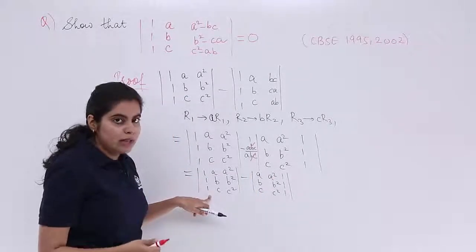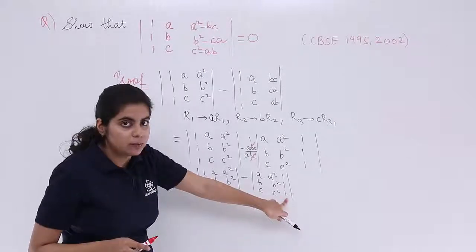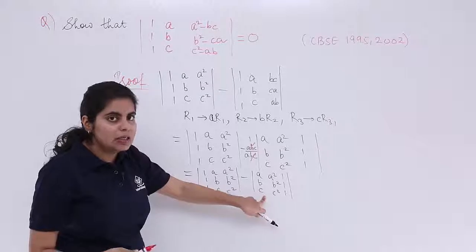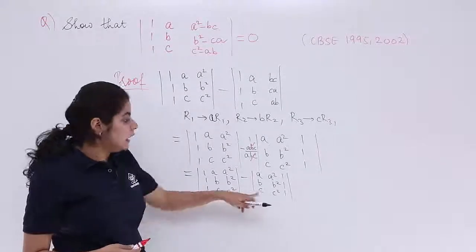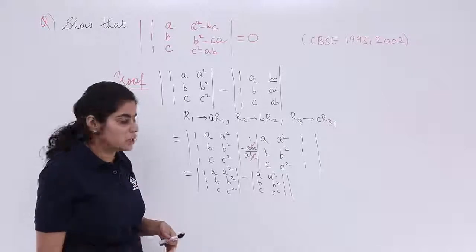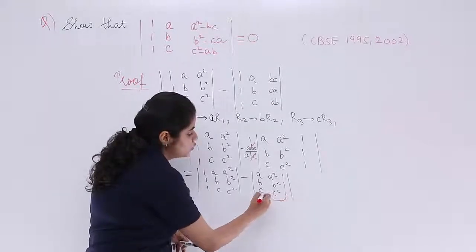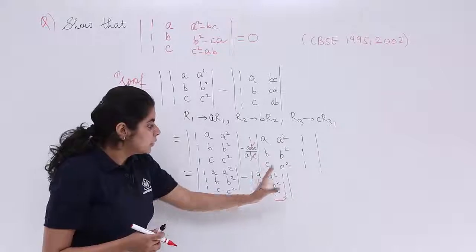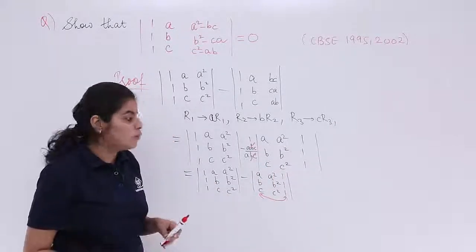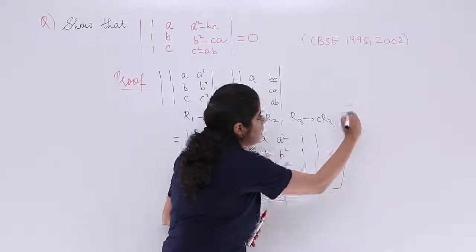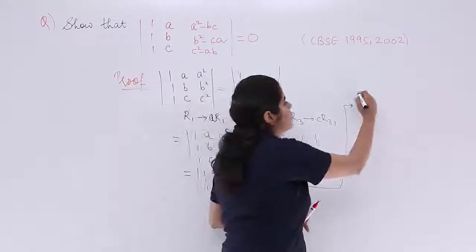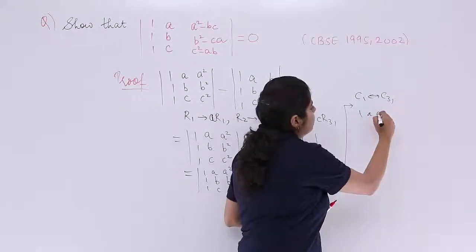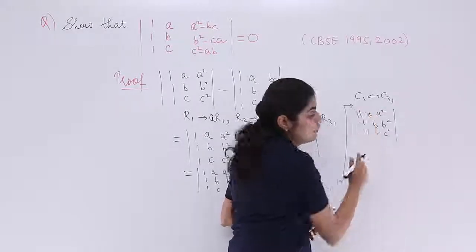Now, 1, 1, 1 should be there, but it should be there in the first column, but here it is in the third column. ABC should be there, but it should be in the second column, but here it is in the first. Similarly, A square, B square, C square should be there, but it should be in the third column, not second. So, let's interchange things. I want this in the first. Let's interchange these two. If you interchange C3 with C1, this thing will come here, this thing will go there. So, I interchange C1 with C3. So, my determinant changes, no change in the first one: 1, A, A square, 1, B, B square, 1, C, C square. Minus was already there. You apply one interchange, you have again minus, so minus minus becomes plus.